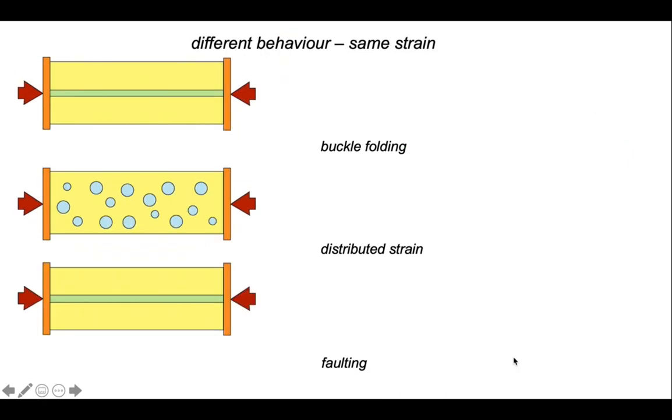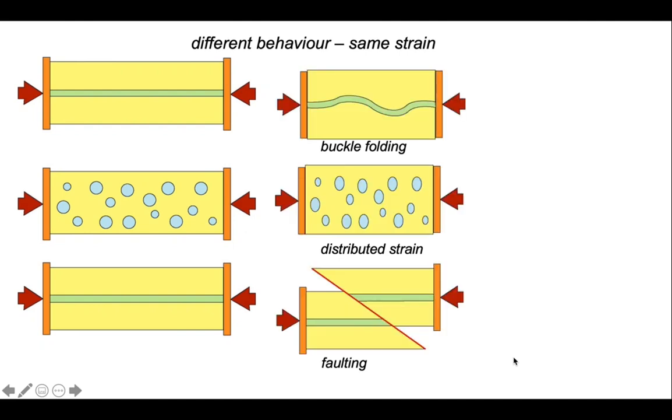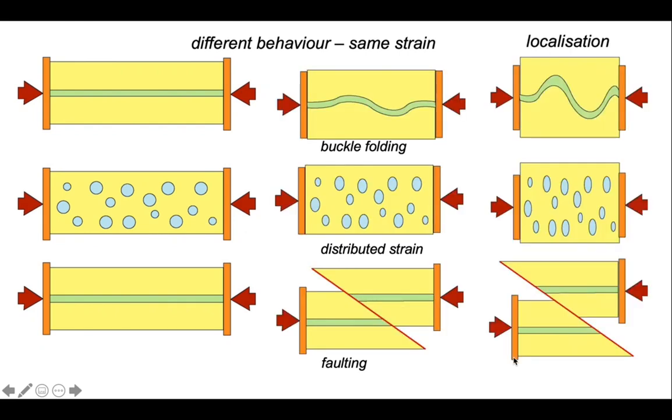Through these simple cartoon experiments, we've seen that we can generate different behaviour, different types of structures from the same strain. These different behaviours represent different patterns of localization of the deformation through our material. With the folding, we can see that the amplitude of the folds has increased and the wavelength shortened as the deformation has progressed. In the middle version, the strain is distributed throughout the model, and our initial circular markers become increasingly elliptical as the deformation has progressed.